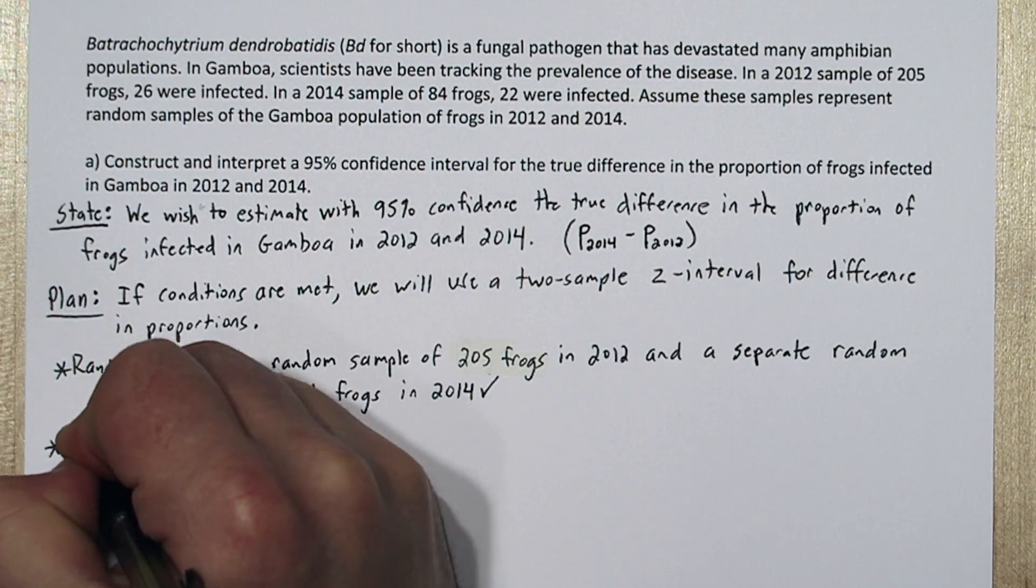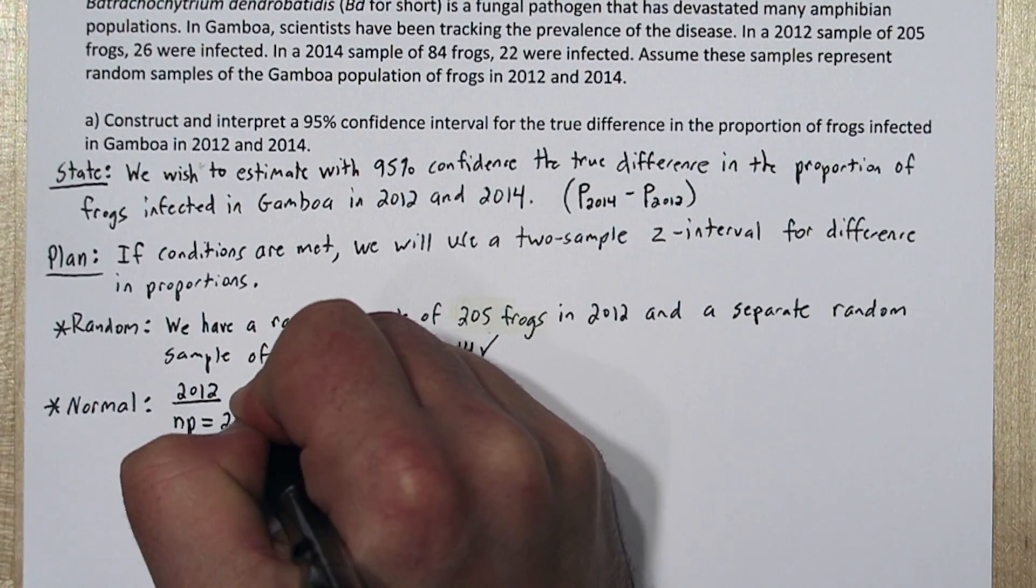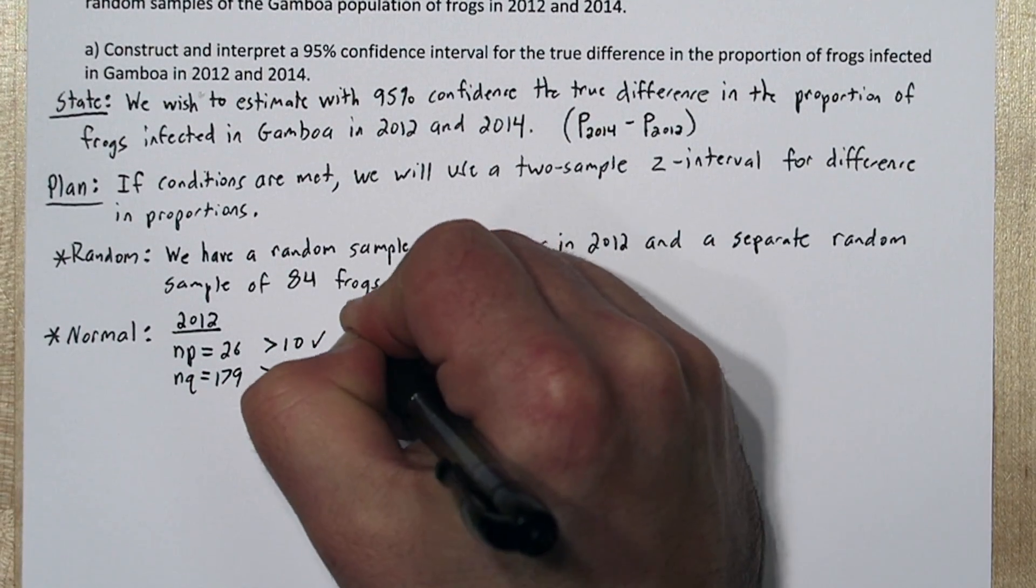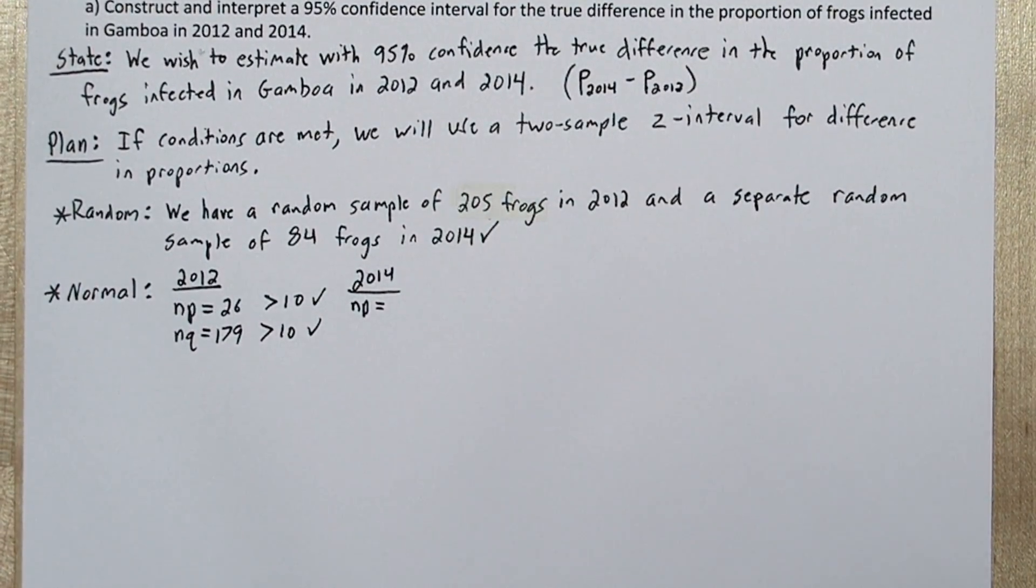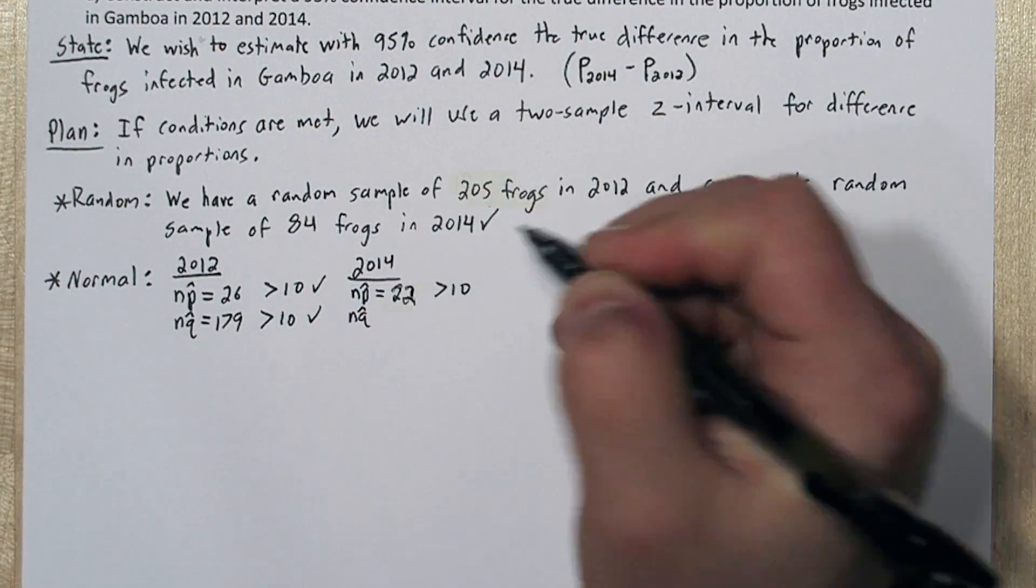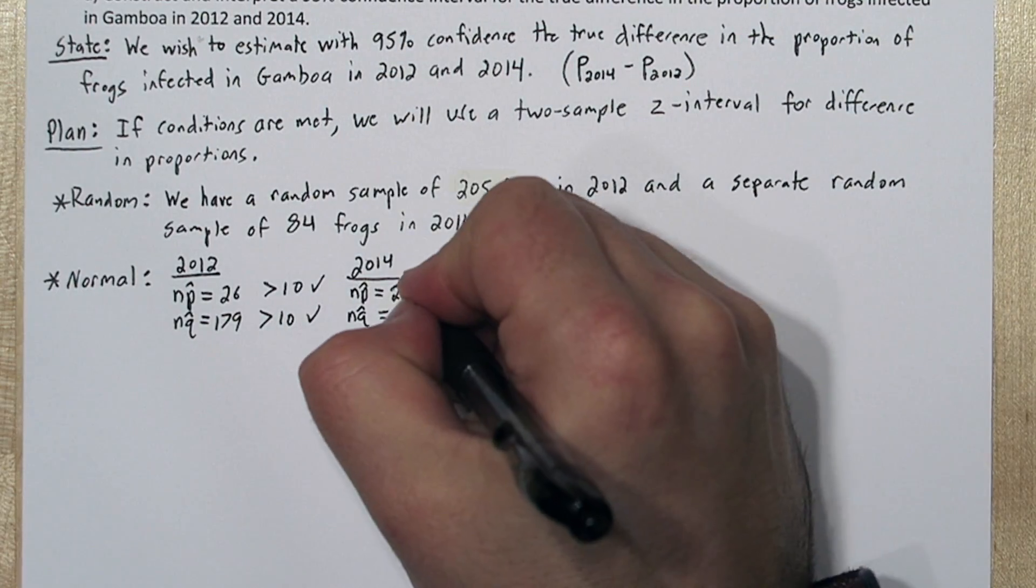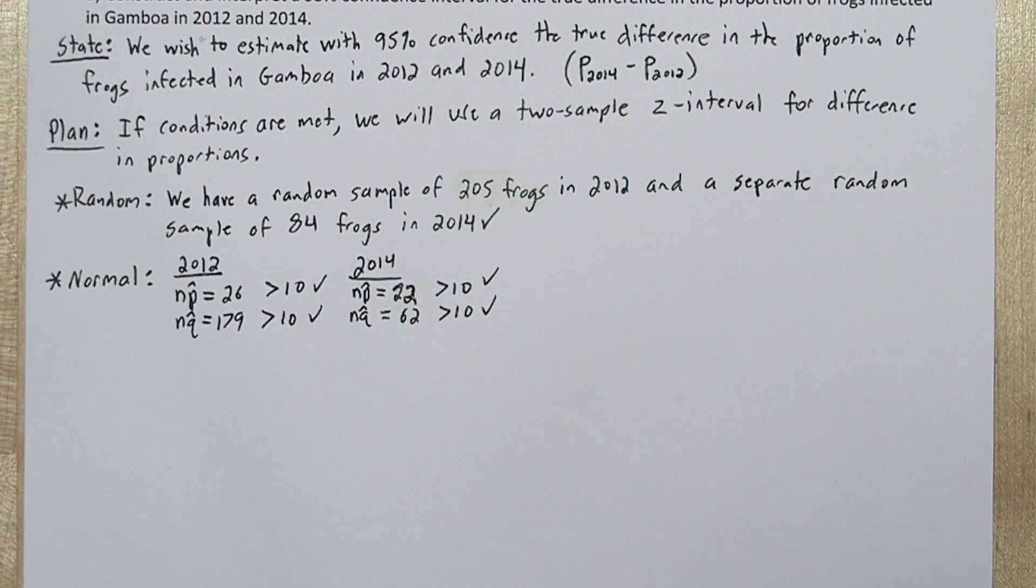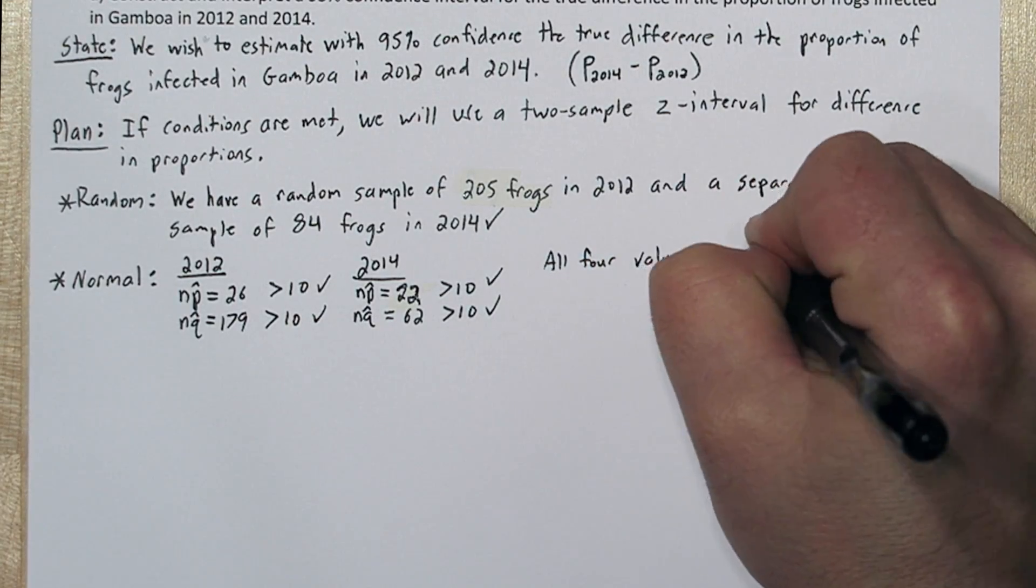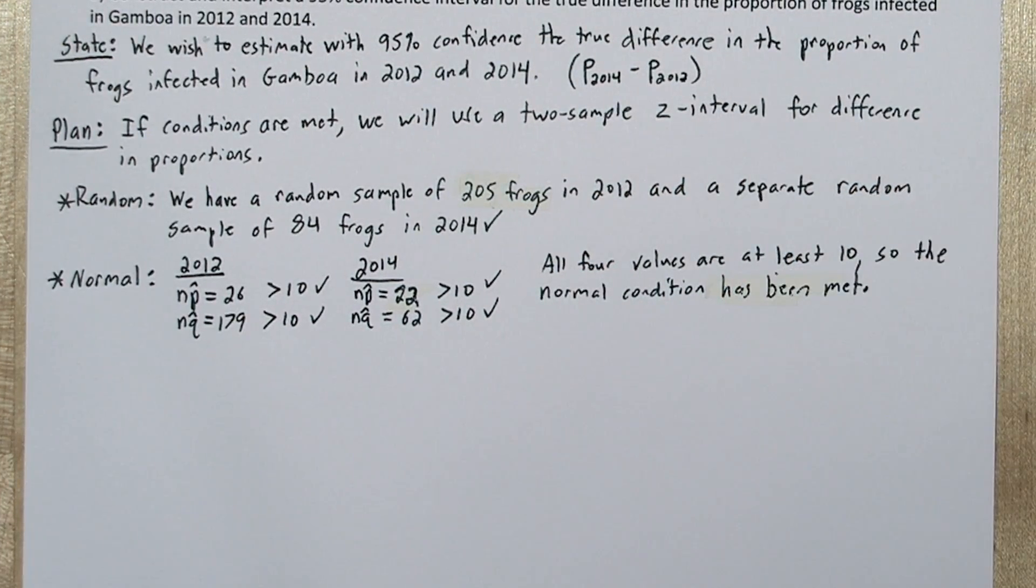For the normal condition, we need to check that we have at least 10 successes and 10 failures in each sample. A success is strangely defined here as a frog that's infected. In 2012, we had 26 infected frogs and 179 non-infected frogs, both greater than 10. In 2014, there were 22 infected frogs and 62 non-infected, also both greater than 10. So the normal condition is met.